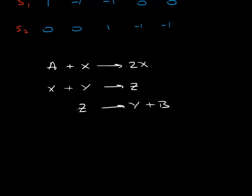And Z is transformed into Y plus B. So if you're British, this is a Z. If you're American, this is a Z. So now let's label these reactions. V1, V2, and V3.